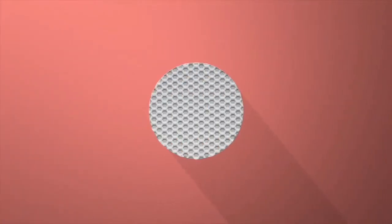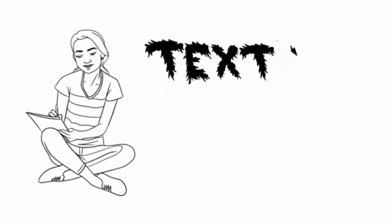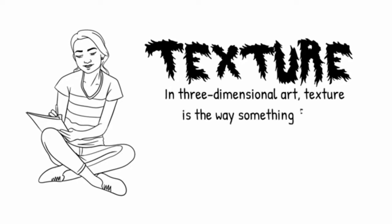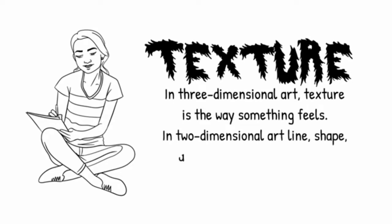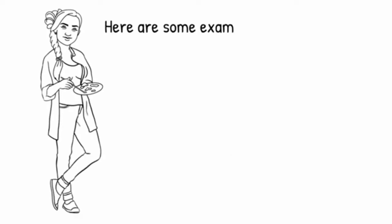Another element of design is texture, which is the tactile quality of the surface — that is, how the surface feels. There are two ways of explaining texture: the first is in three-dimensional form, which is the visual feel of an object when touched, and in two-dimensional form, line, shape, and value are used to illustrate how an object feels.